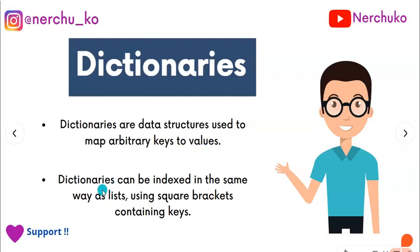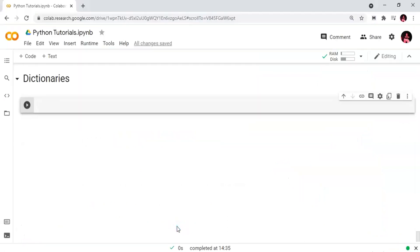Dictionaries can be indexed in the same way as lists using square brackets containing keys. In a list, we index elements based on position. But in a dictionary, we index using keys. So, we will make it practical.